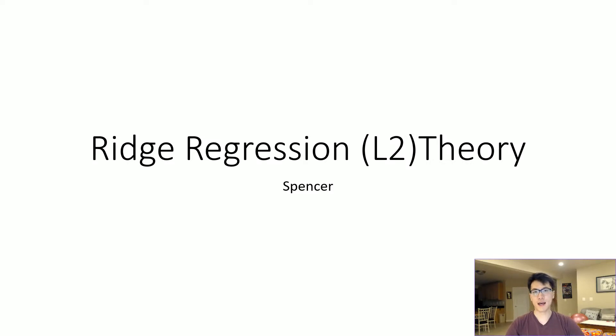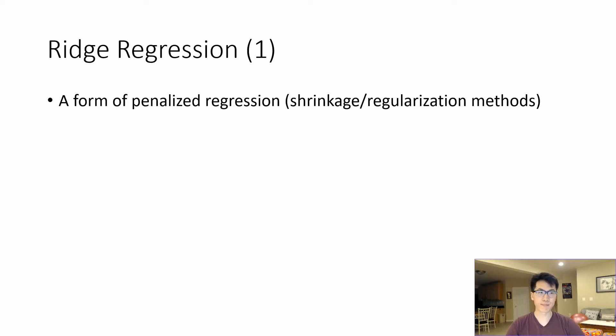Ridge regression, also known as the L2 norm, is essentially a linear regression model with an added constraint. It's known for penalizing certain coefficients, driving them to zero or close to zero.